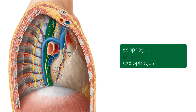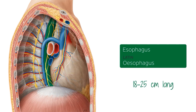In humans, the esophagus is around 18 to 25 centimeters in length. It travels behind the trachea, as you can clearly see here on this image, and behind the heart, passing through the diaphragm and then emptying into the cardia of the stomach.